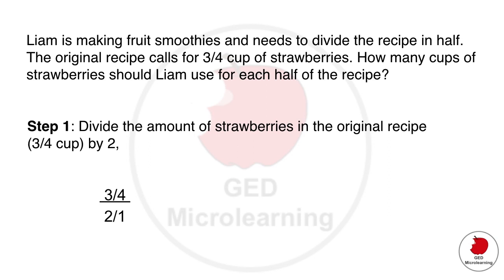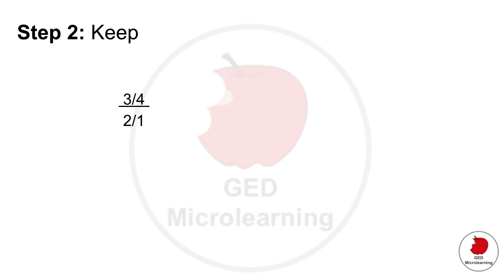So once again step one they're telling us we have to divide that amount of strawberries in the original recipe by two. So this is how we would set up our equation right three fourths of a cup of strawberries divided by two or two over one. We're going to go ahead and rewrite our problem like this and then we're going to apply as always our keep change flip formula.